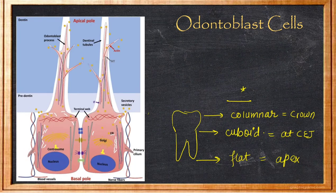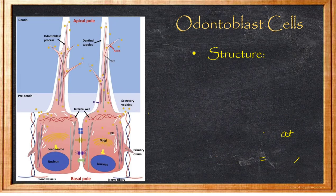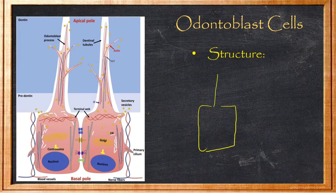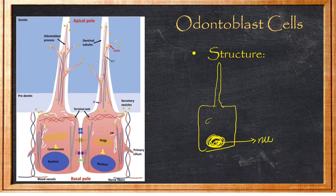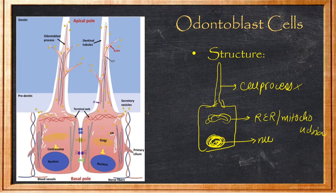Regarding the structure of odontoblast cells: they have organelles concentrated in the base, with a basal nucleus at the base, and rough endoplasmic reticulum and mitochondria at the apex of the nucleus. The cell then tapers into a cell process. There are no organelles present in the cell process — the organelles are only found in the cell body.